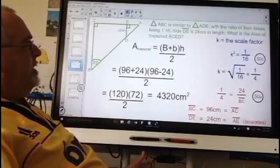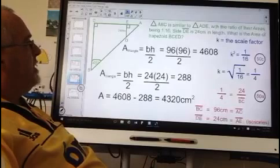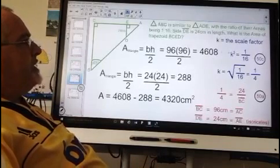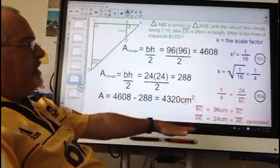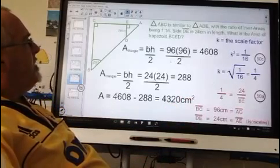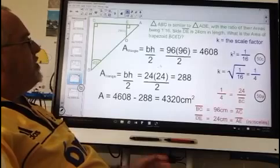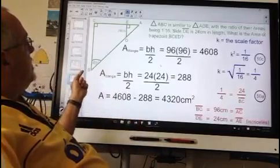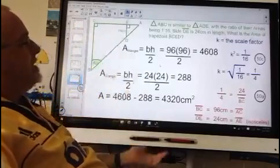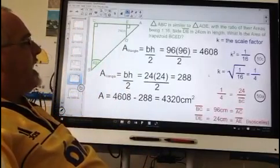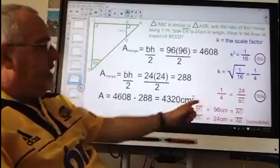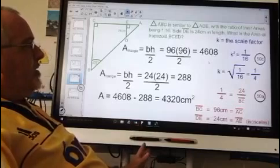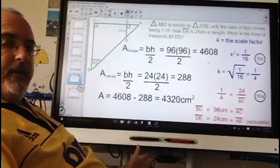A second method involves not using the area of a trapezoid formula and involves using the area of a triangle formula instead. The first steps are the same. The blue step and the red step are exactly the same. But then we find the area of the large triangle which we get by multiplying 96 by 96 over 2. And that is using side BC as a base and side AC as the height. And is again justified by this statement where we found that side AC was 96 cm. And we get 4,608. I did not bother applying the unit of measure because this is not the final answer to the question.